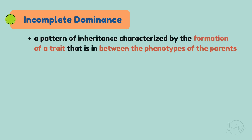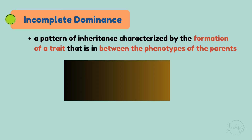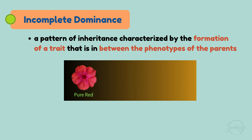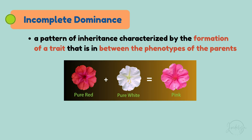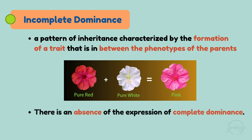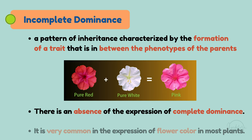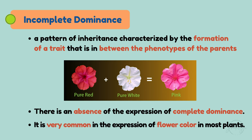Incomplete dominance is a pattern of inheritance characterized by the formation of a trait that is in between the phenotypes of the parents. Imagine this: you cross a pure red flower with a pure white flower, and the result? A pink flower. This is because the dominant and recessive traits blend — there is an absence of the expression of complete dominance. This pattern is very common in the expression of flower color in most plants.